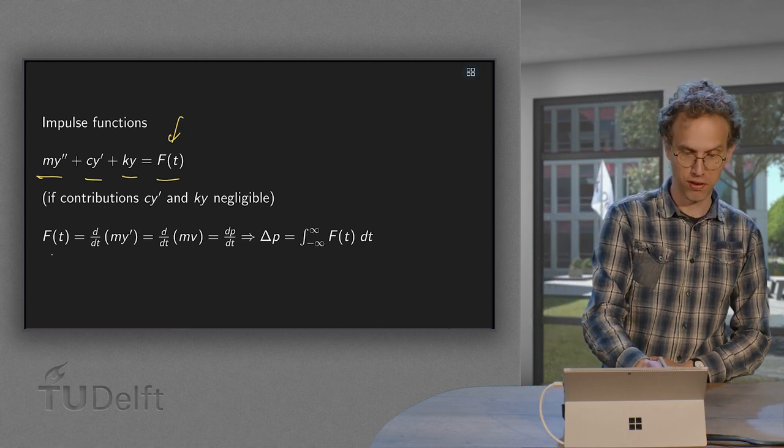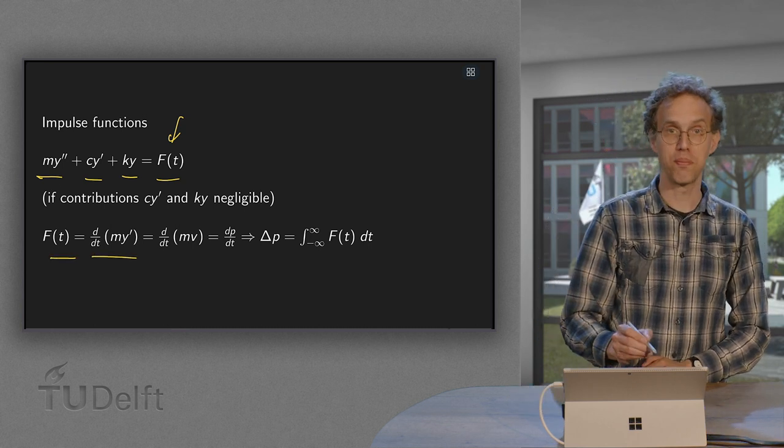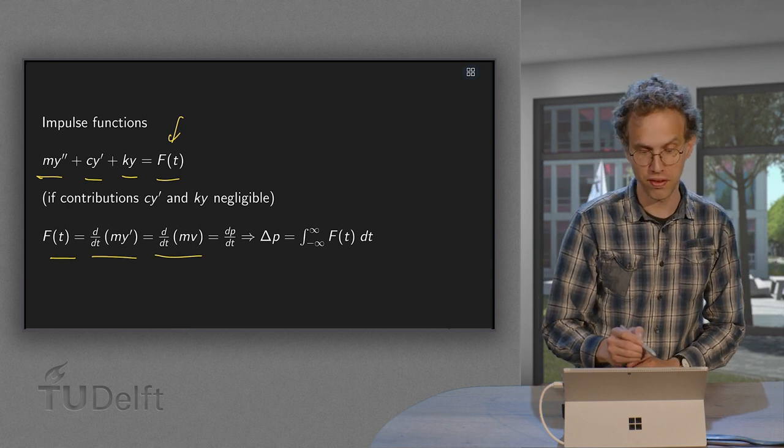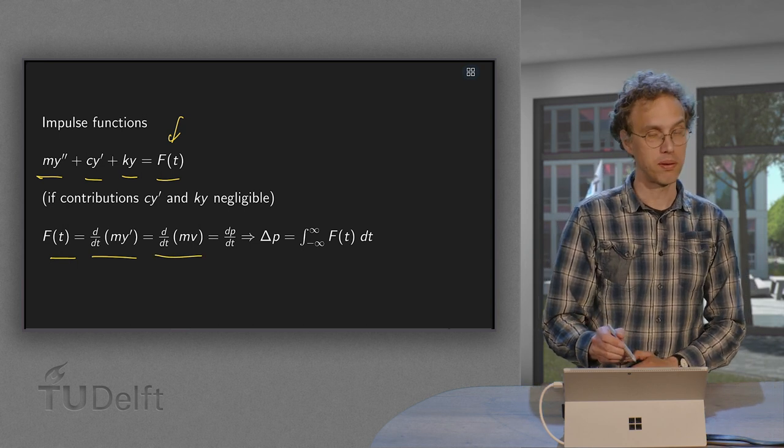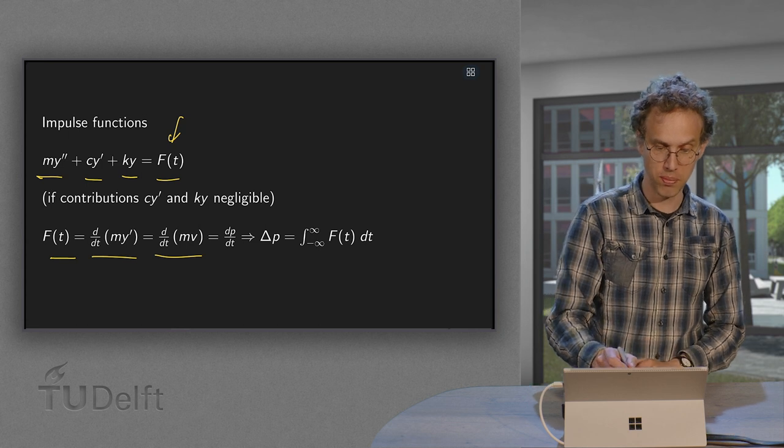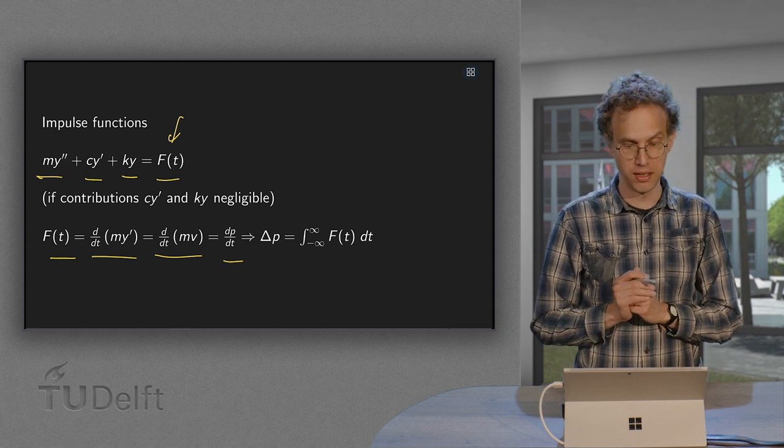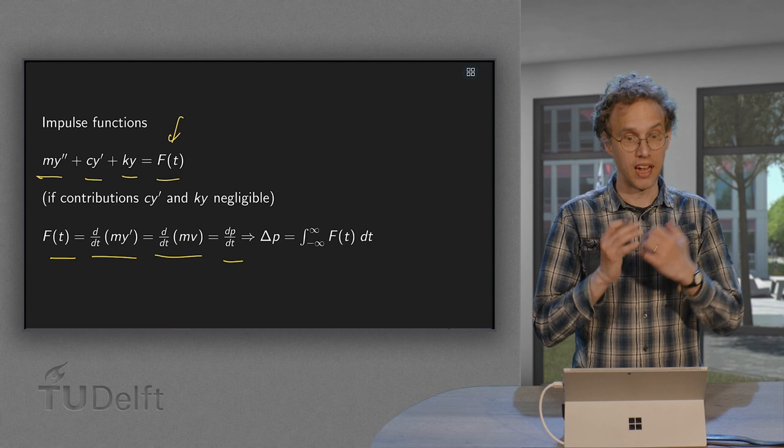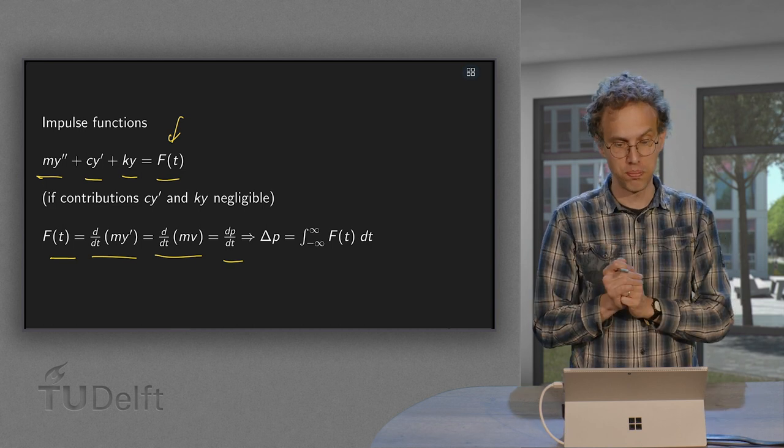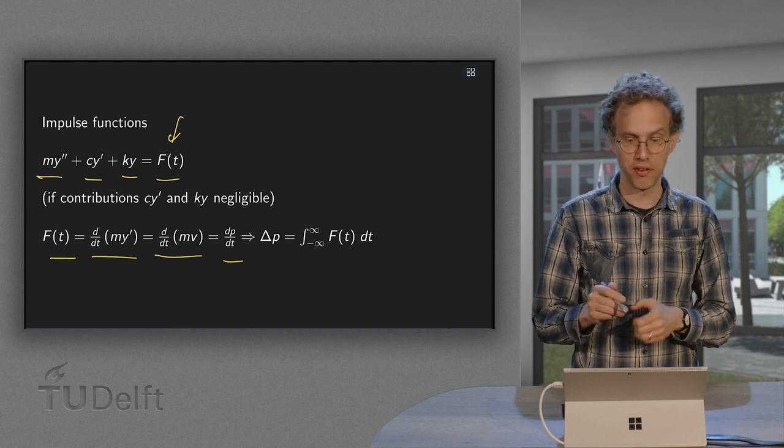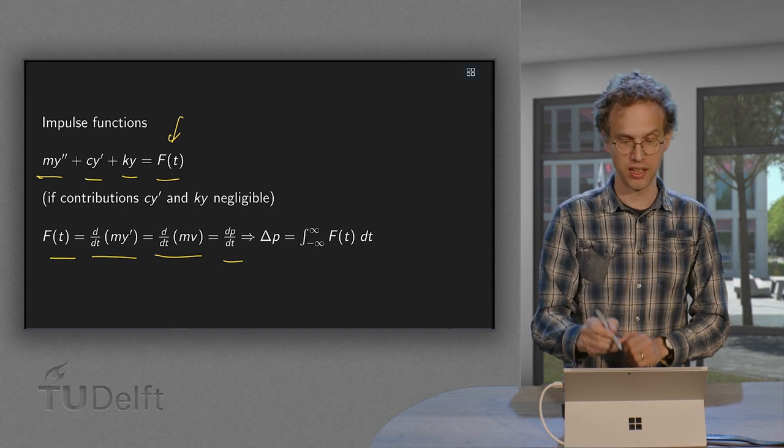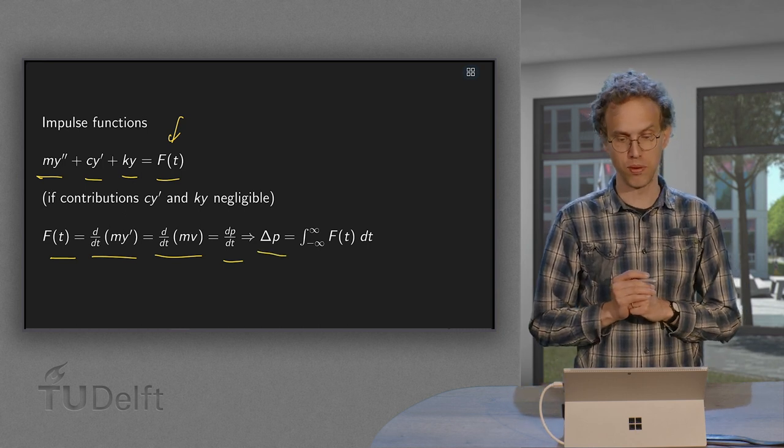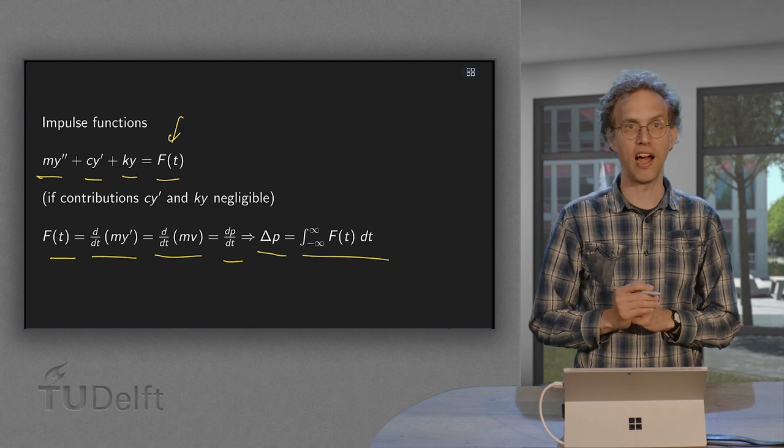Then you can write this force as d/dt of my'. y' equals v, so d/dt of mv. mv is the linear momentum, so you get dp/dt. So what's happening is force equals the change in momentum. So if you integrate your force, you get the Δp. The change in momentum is integral over F.